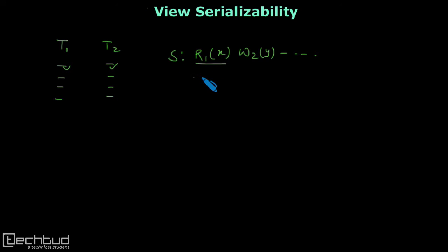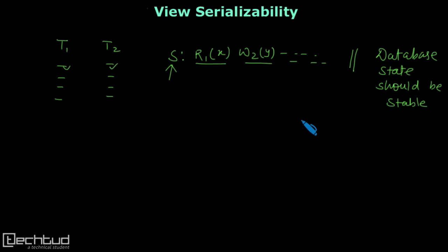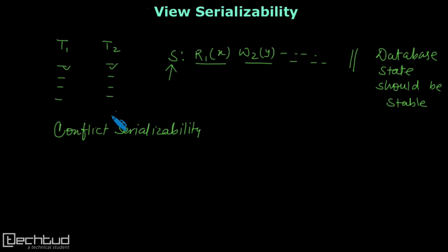But this benefit of concurrency also has some shortcomings. When you are scheduling processes, we have already seen that it can cause inconsistency. Inconsistency may be due to the way we are scheduling these operations. So whenever we form a schedule, we have to check that the schedule is correct. At the end of execution, when the schedule terminates, the database state should be stable.